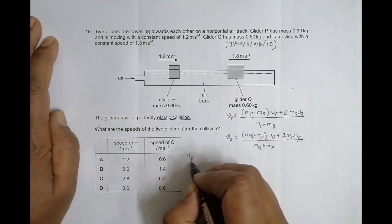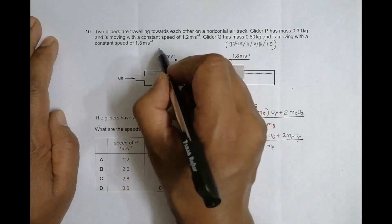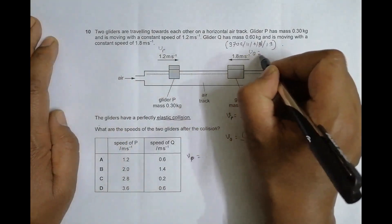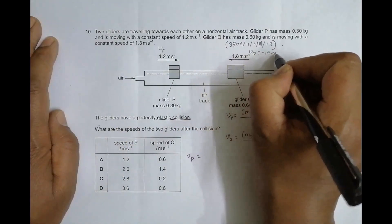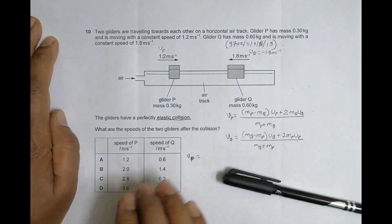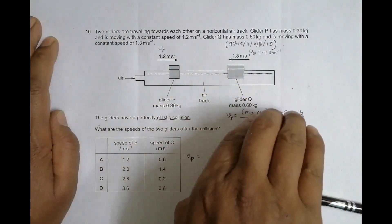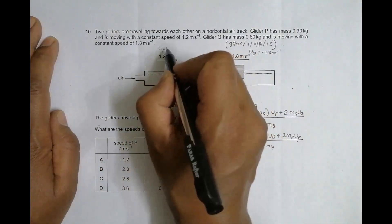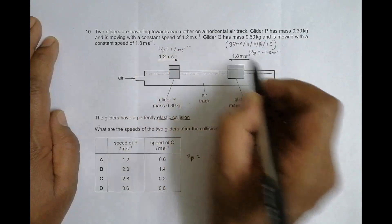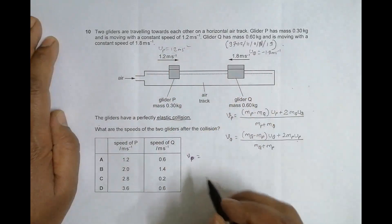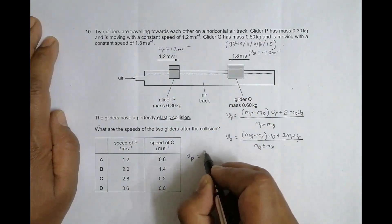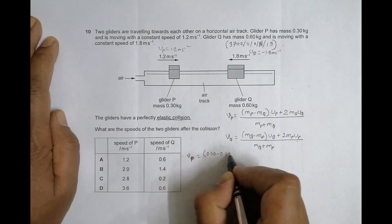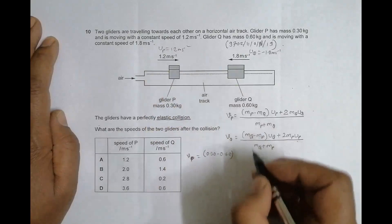Using this formula, let's get the value. VP should be equal to - this UP is 1.2 meter per second and UQ will be minus 1.8 meter per second. In our theory, velocity going to the right is taken as positive, and to the left as negative. So UP equals 1.2 meter per second and UQ equals minus 1.8.